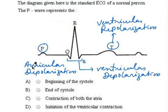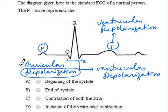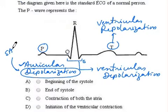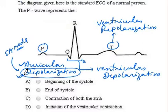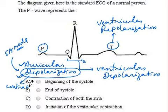Depolarization is caused, especially of auricles, when they receive stimulus from the SA node. This depolarization indicates the activities of auricular muscles, and these activities result in contraction of the auricular muscles.